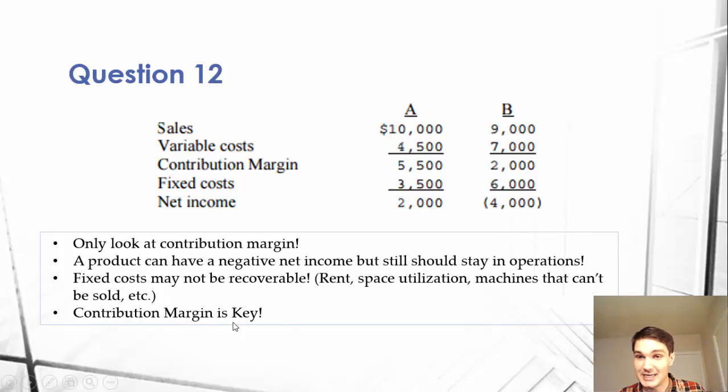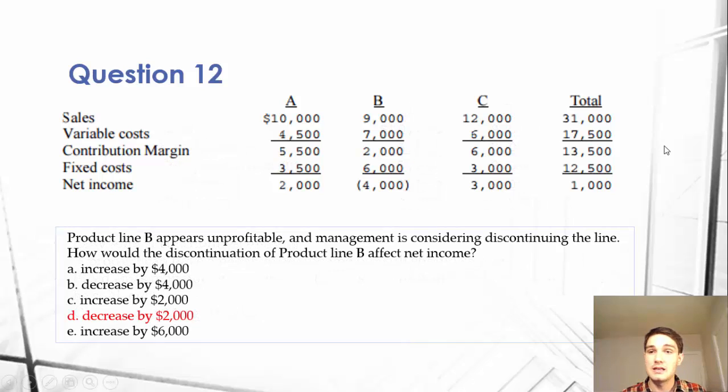We're going to lose out on a lot more money if we cut the product because we won't recover those fixed costs potentially. So again, contribution margin is key on this decision-making process. If you're looking at multiple product lines or multiple departments and you're looking to cut one, just look at the contribution margin. If the contribution margin is negative, then you cut it. If the contribution margin is positive, keep it. Don't look at net income.